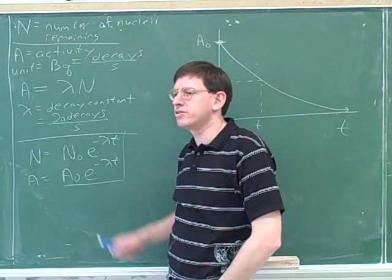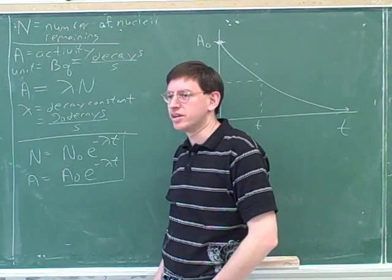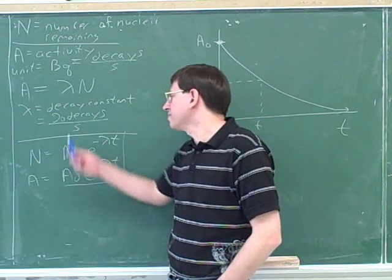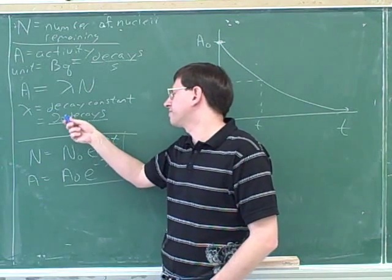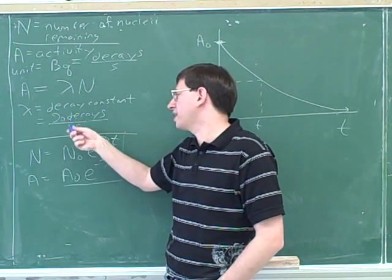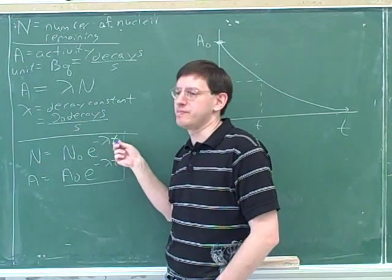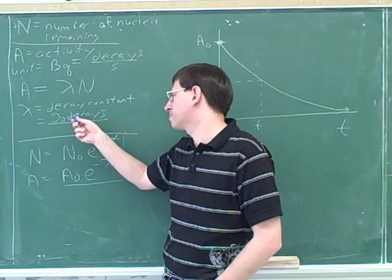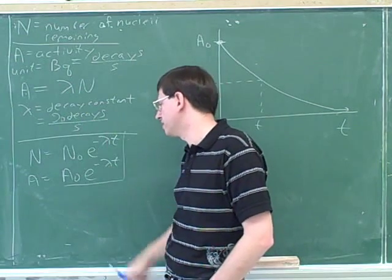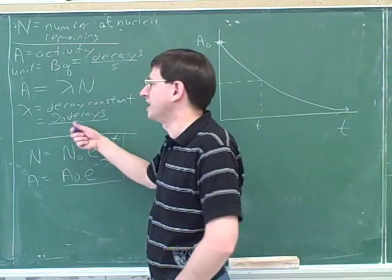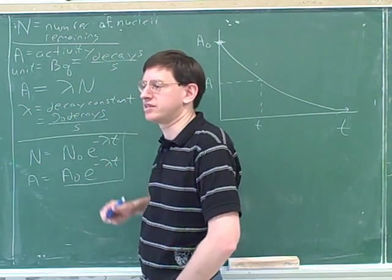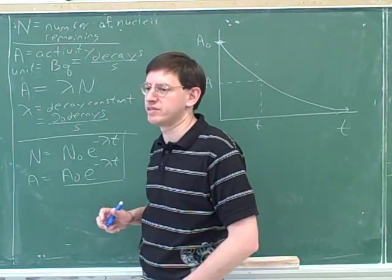Now, these don't have to be in standard units, as long as they're consistent with each other. For example, if lambda is in decays per second, then the time has to be in seconds. But if lambda was percent decays per day, then you could use time in days. Or if lambda was percent decay per year, then you could use the time in years. So you have to use consistent units, but you don't have to use SI units. That's important, because oftentimes seconds are not a very useful unit for radioactivity, because the time scale for radioactivity might be billions of years.